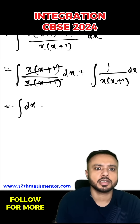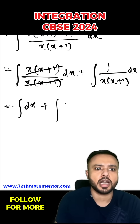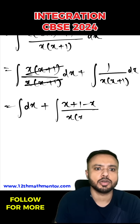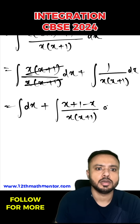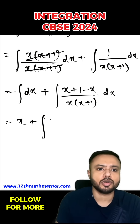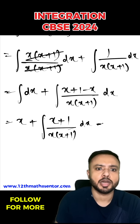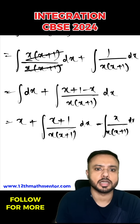For the integral of 1/[x(x+1)], I'm going to add and subtract x in the numerator, writing it as (x + 1 - x) / [x(x+1)] dx. Integral of dx is x. To solve the remaining integral, I separate it into two: ∫(x+1)/[x(x+1)] dx minus ∫x/[x(x+1)] dx.